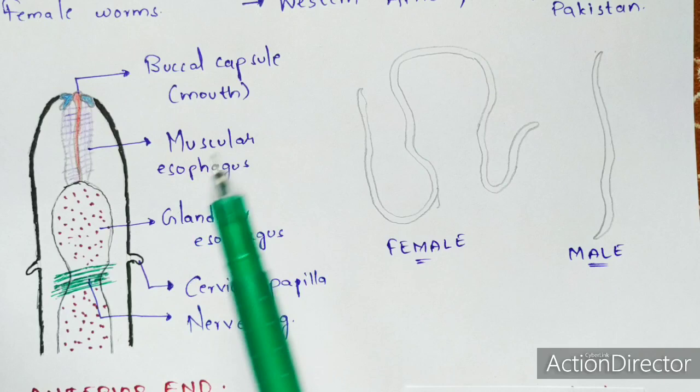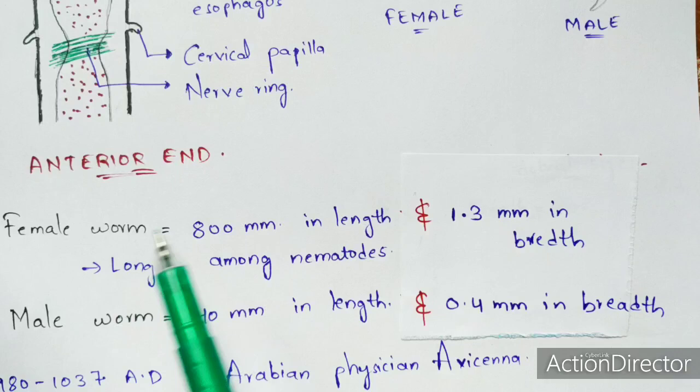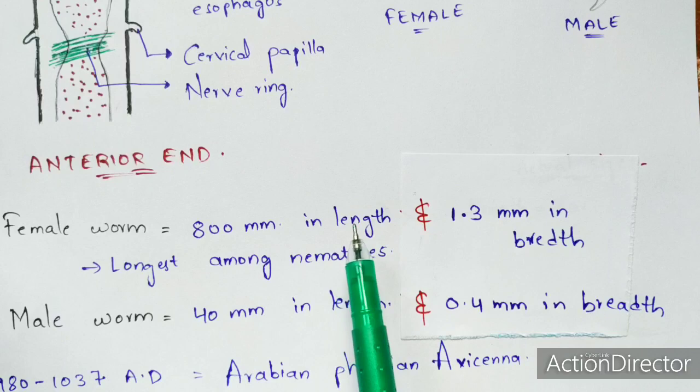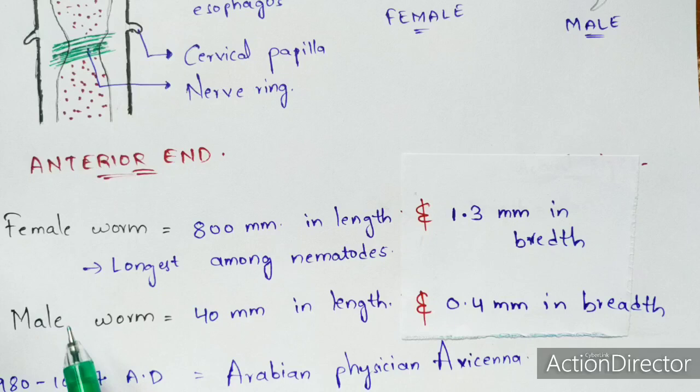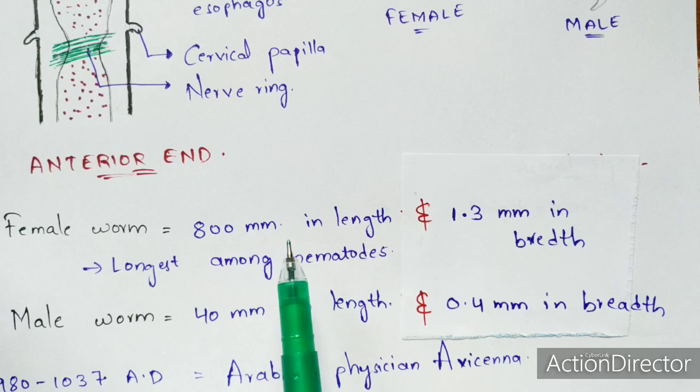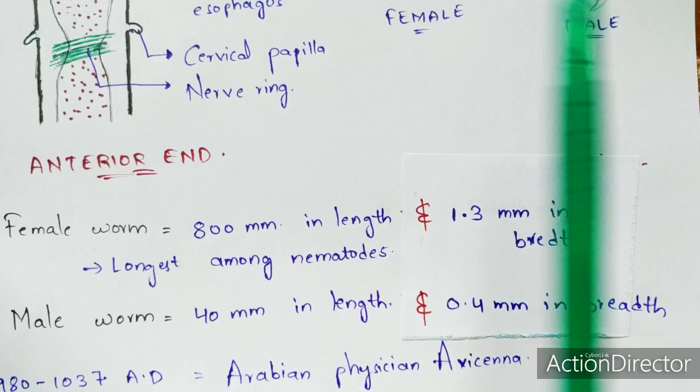Regarding size, the female worm ranges from 800 millimeters in length and 1.3 millimeters in breadth — it is the longest among nematodes, reaching up to 120 centimeters. The male worm is 40 millimeters in length and 0.4 millimeters in breadth. By this you can understand that the female worm is very much larger when compared to the male worm.